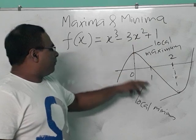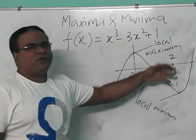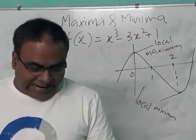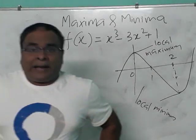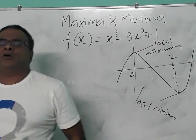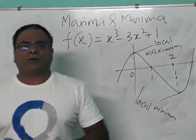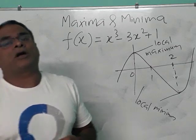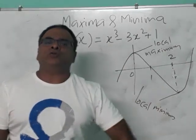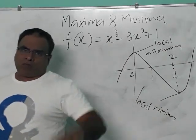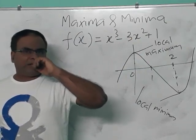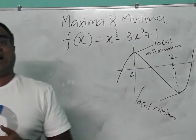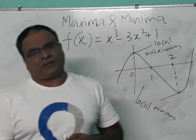So the minimum is for the value of x equal to 2 — that we can easily understand. Then, by using calculus, how can you calculate the local maximum and local minimum? There are two tests.